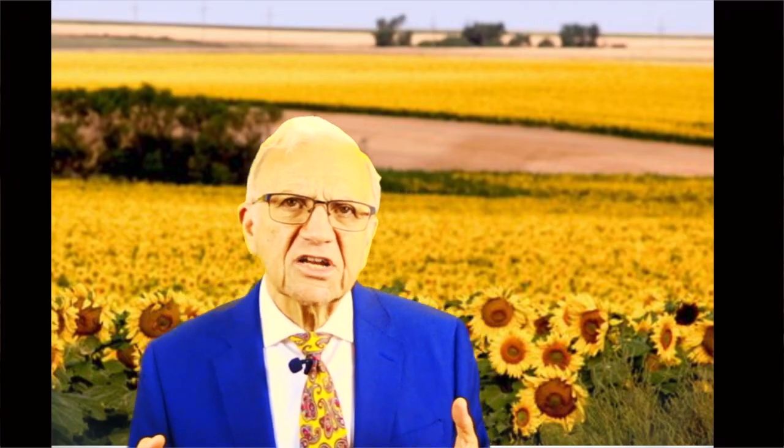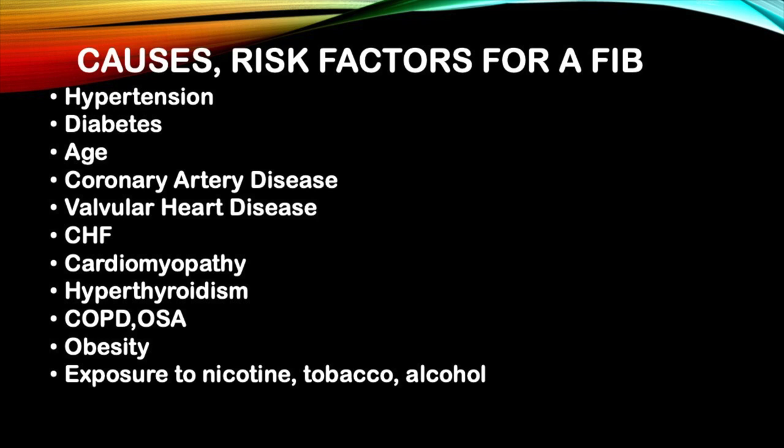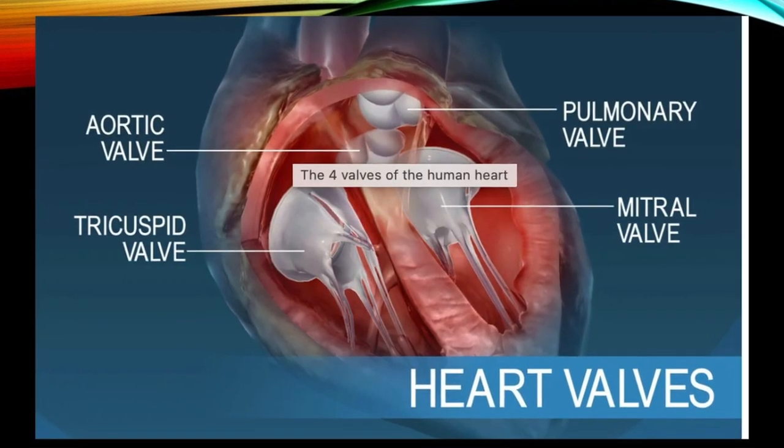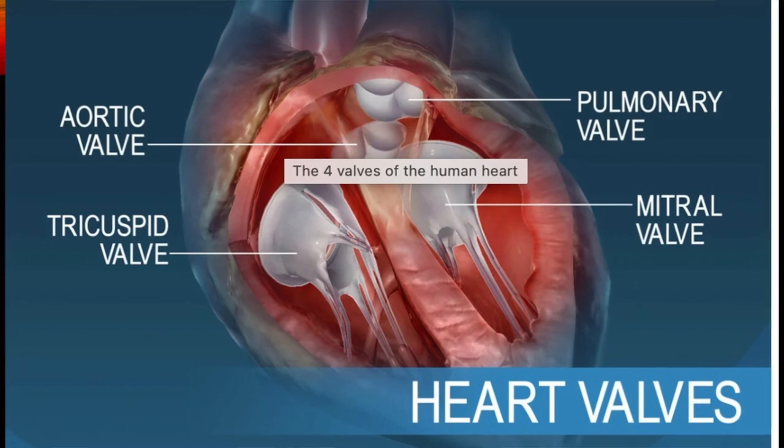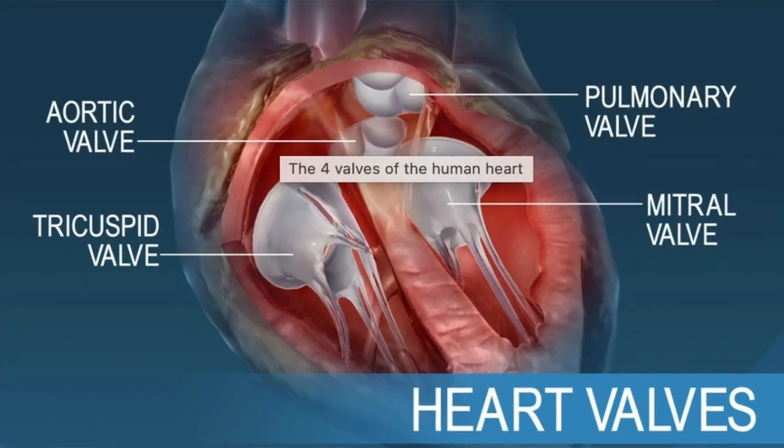What causes atrial fibrillation? Any type of heart disease can lead to atrial fibrillation — problems with the valves, problems with the heart muscle itself, or the sac around the heart. Coronary artery disease can also lead to it. There are four valves in the heart: two that separate the upper chambers from the lower chambers, and two — the aortic and pulmonic valves — that separate the heart from the large vessels. Any stenosis or regurgitation of these valves — aortic stenosis, aortic regurgitation, mitral stenosis, mitral regurgitation, or tricuspid regurgitation — can all lead to atrial fibrillation.